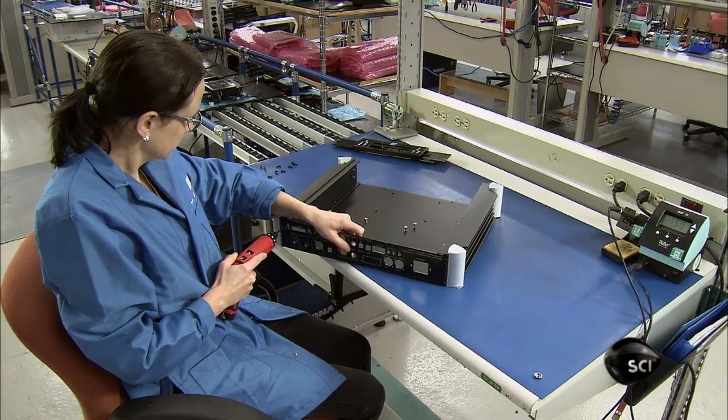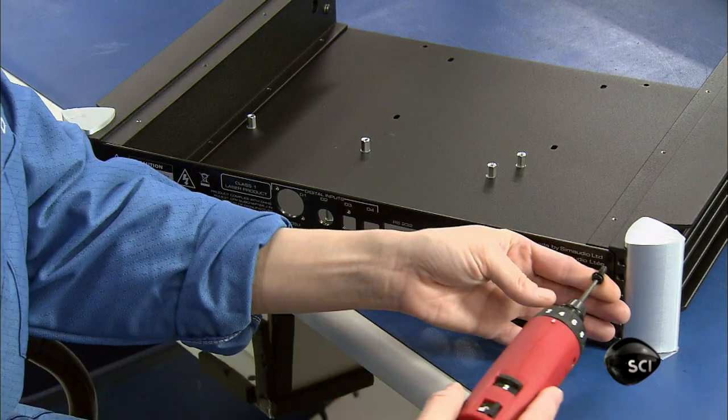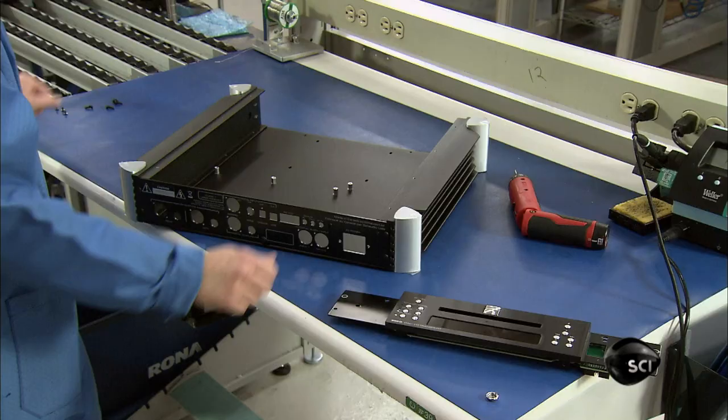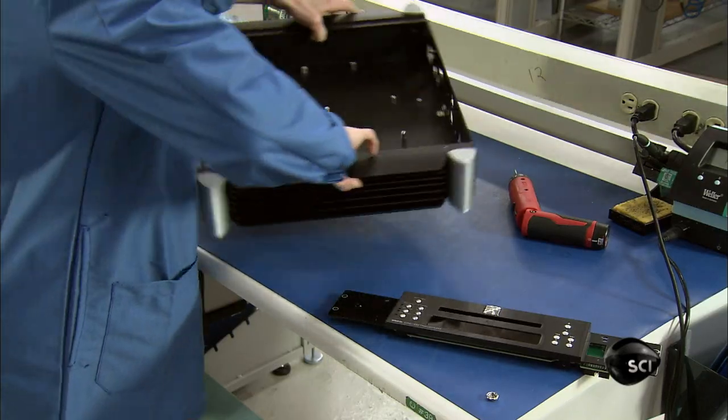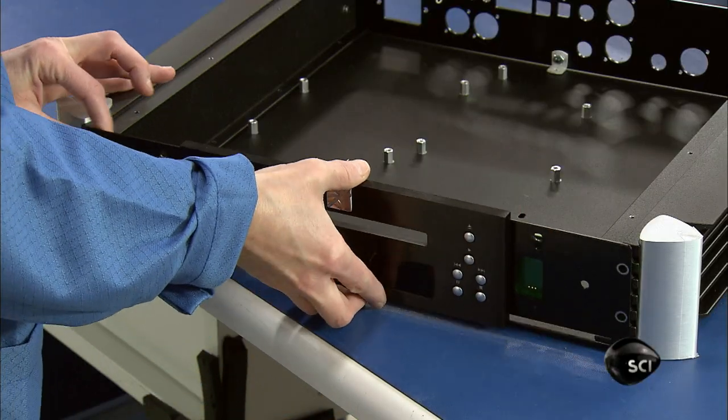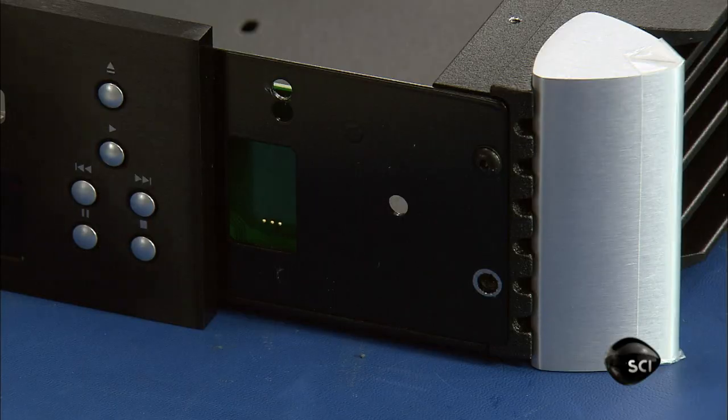They assemble the chassis's bottom, side and back panels. They attach the front panel with its push button controls and in the center, an opening for the CD drive.